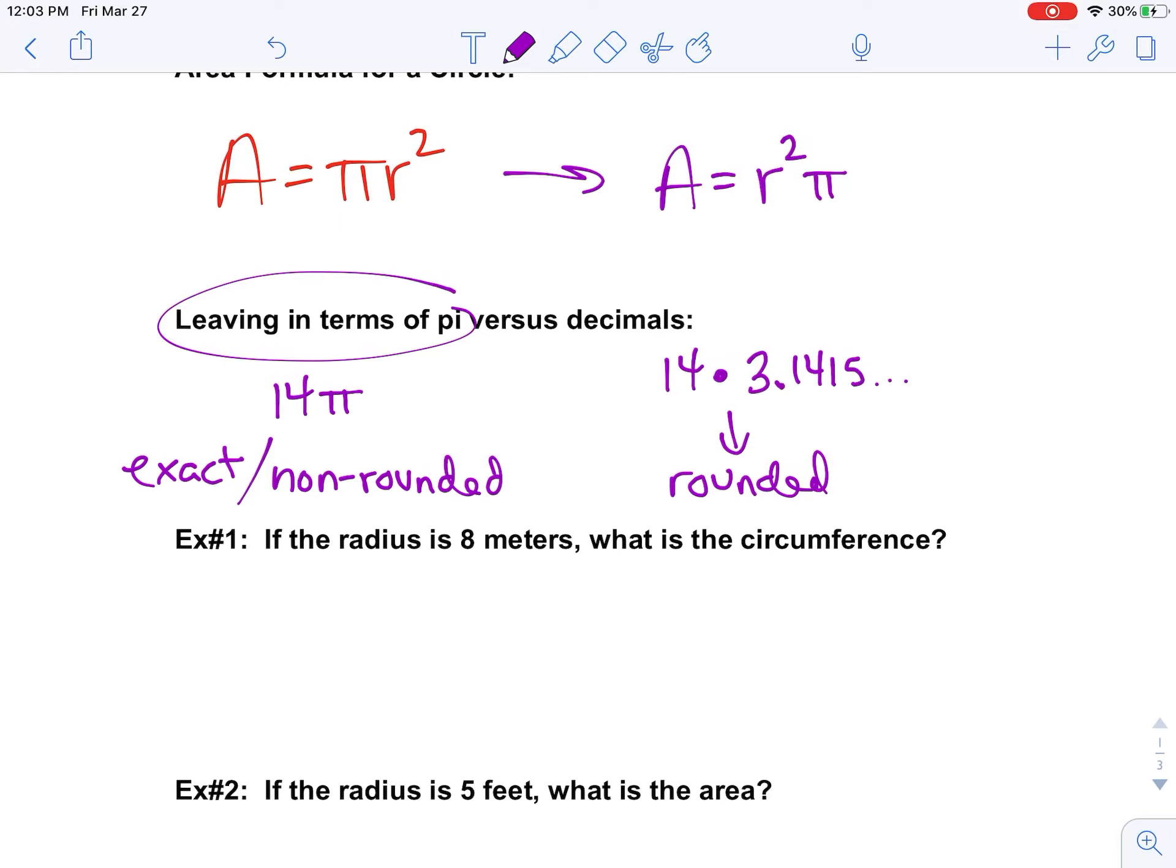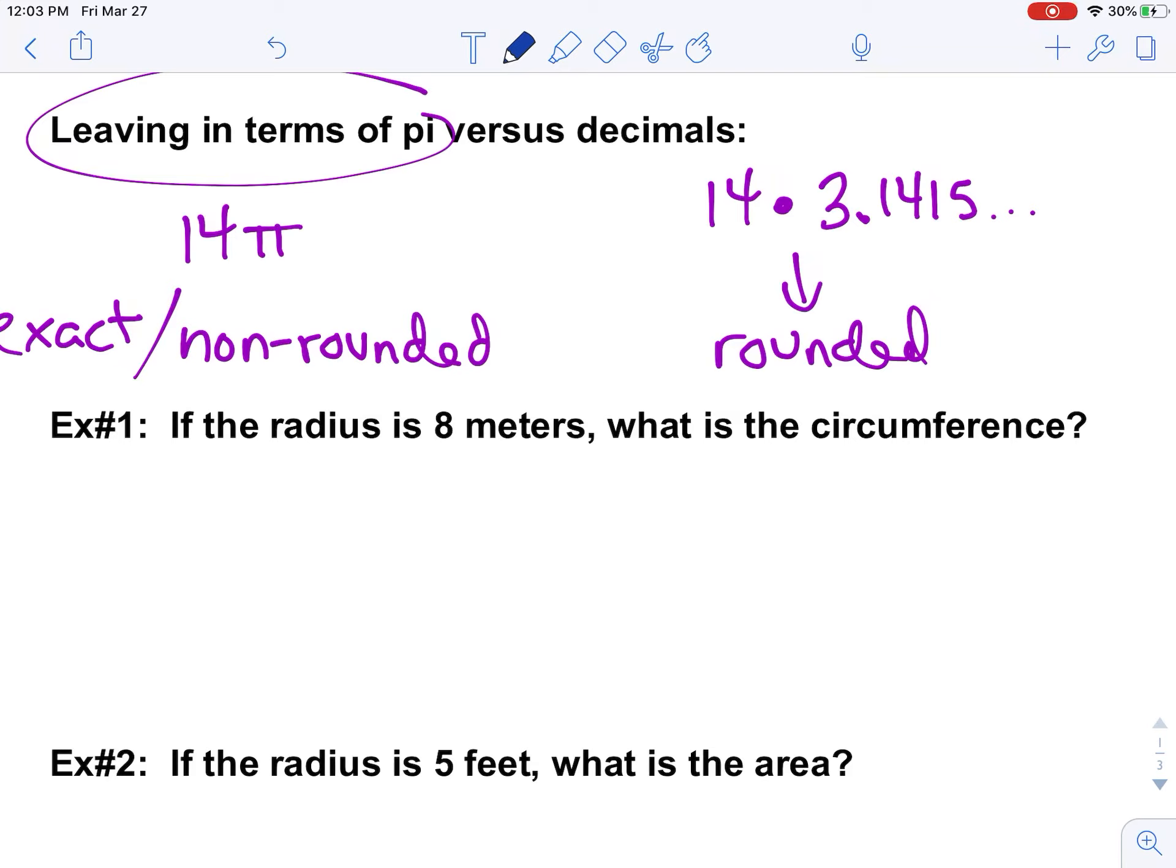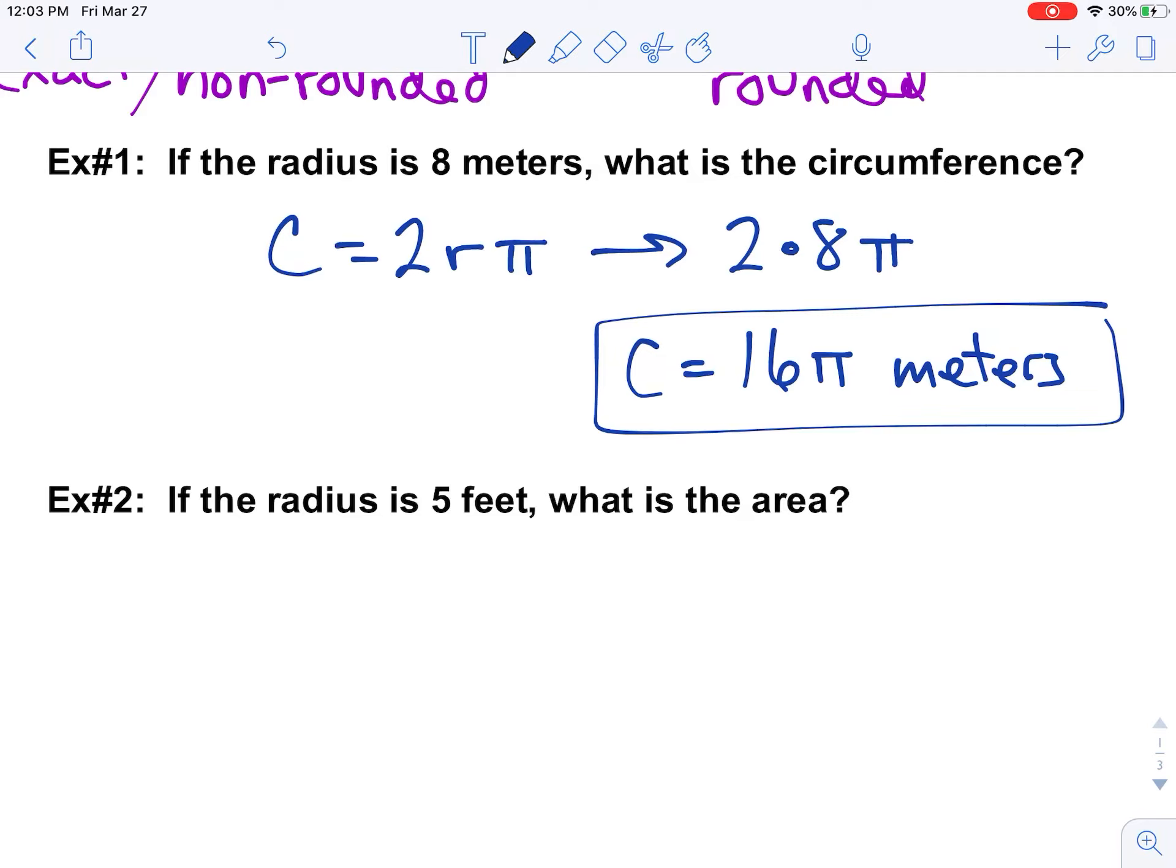So let's do a couple examples. So if the radius is 8 and they want the circumference, circumference equals 2rπ, if we leave it in terms of pi. So what I want you to do is I want you to do 2 times 8 and just put a pi on the end of it. So 16π meters is the circumference, and that is the answer. If I want to find the radius, the radius is 5 feet, and they want the area. The area is r² with a pi on the end of it. So in this case, we're going to take 5 and square it and put a pi on it. So that would be 25π square feet because we squared the 5 feet. So that would be the area of this circle.